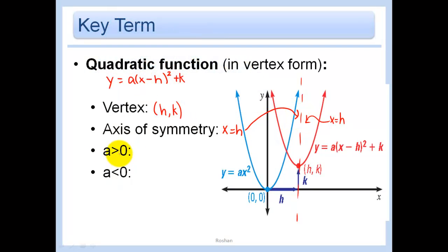If a is greater than 0, then that means my graph opens up. And if a is less than 0, that means my graph opens down.